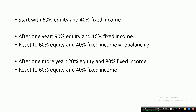When equity has given you good returns and the market is at a high, you can shift the gains to fixed income. Or when the market has crashed, you can shift some amount from fixed income to equity in the hope that you will reap benefits when the market picks up again. This is essentially the idea behind rebalancing. This is not a method to get higher returns — this is a method to lower the risk in your portfolio.